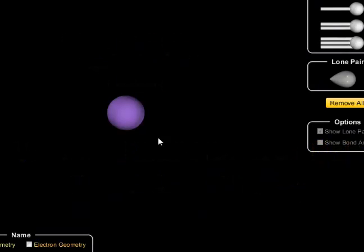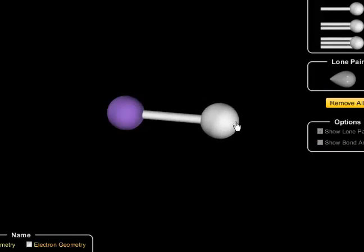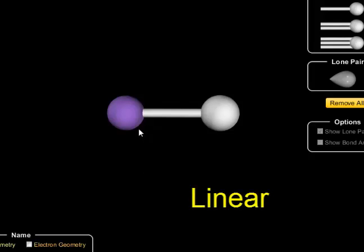So let's start off with something simple. Let's just bond one atom to the central purple guy. So we have two atoms. They're pretty much as far away from each other as they can be. They're 180 degrees apart. This is what we refer to as a linear molecule.